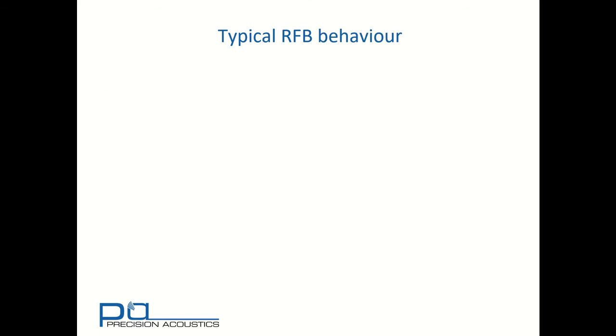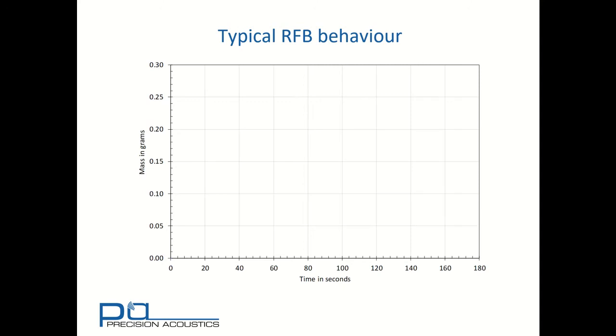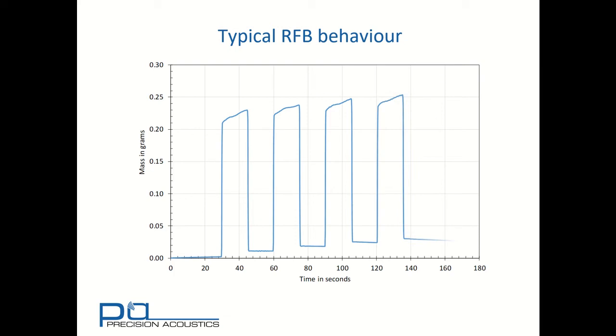Let's look at the typical trace that we may see from a radiation force balance. Here we'll be looking at the effective mass reported by the balance as a function of time. In fact, what we will do is switch the transducer on and off for four separate cycles. We note that if we look at each of the on cycles, immediately following the ongoing transition, there is a drift upwards of the trace.